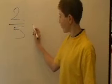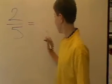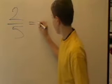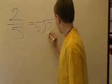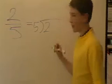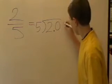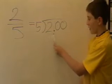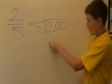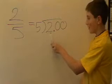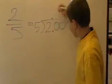Our second fraction today is 2 fifths. We do the same thing as last time — 2 divided by 5. We add a decimal point and two zeros. The value hasn't changed; it still stays 2. So we add our decimal point at the top so we don't forget.